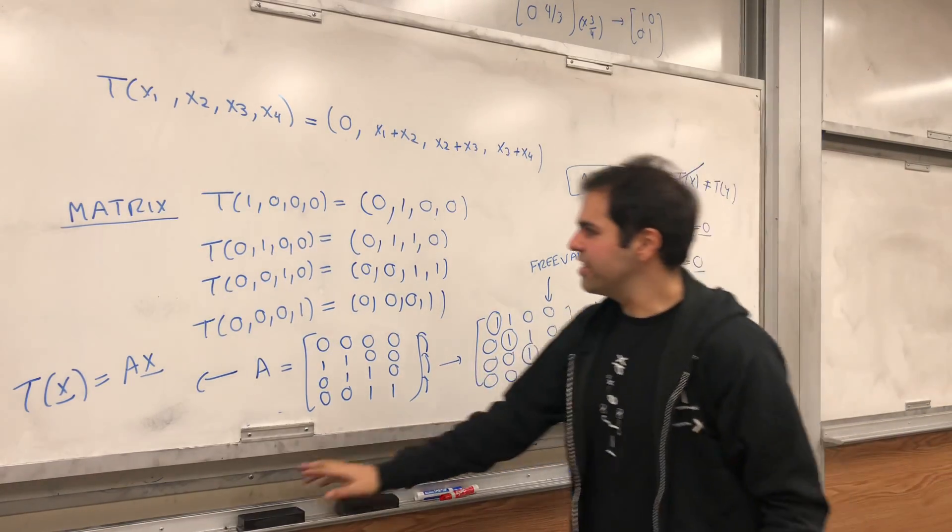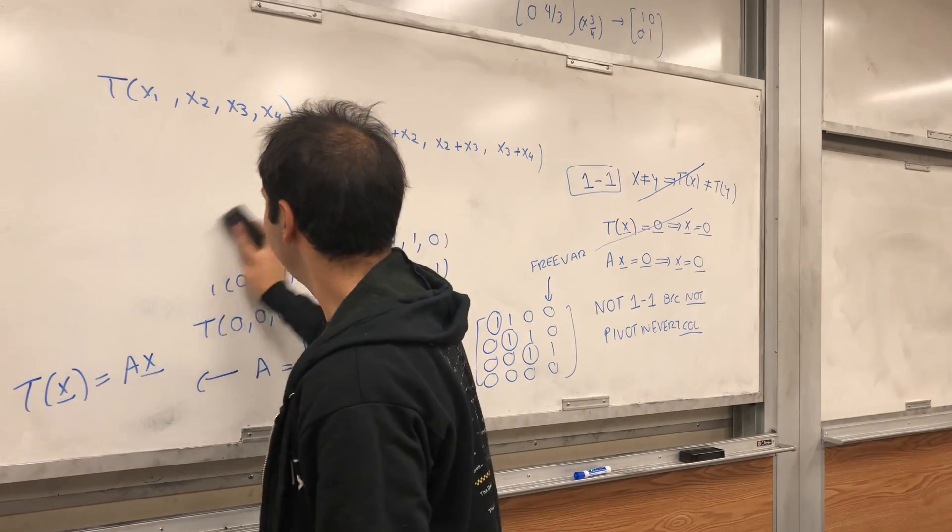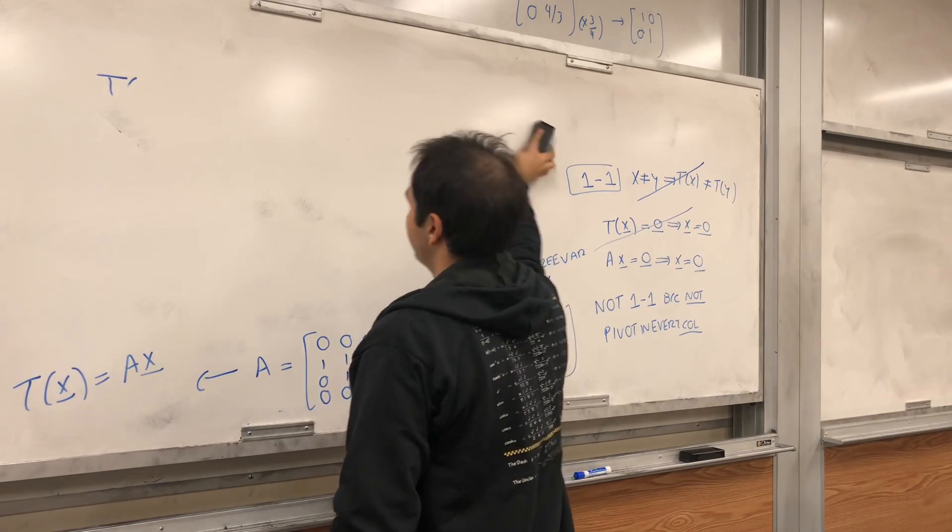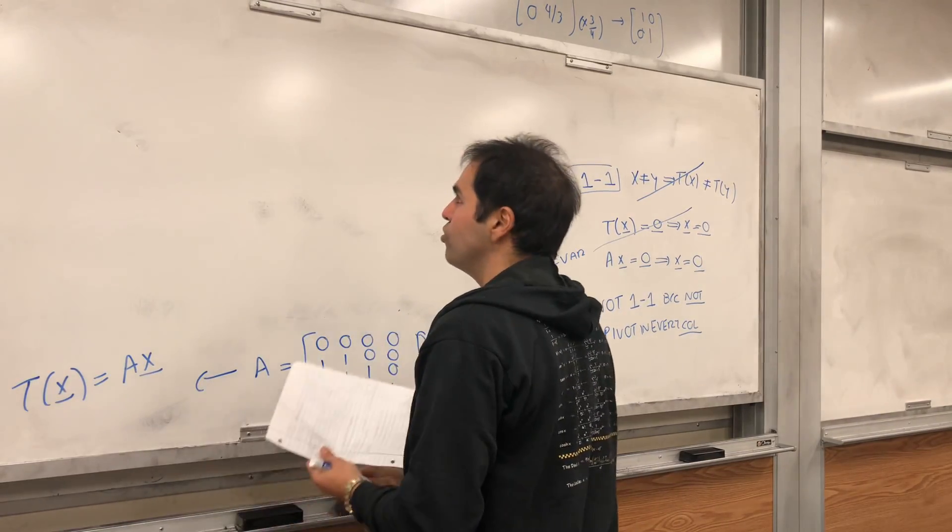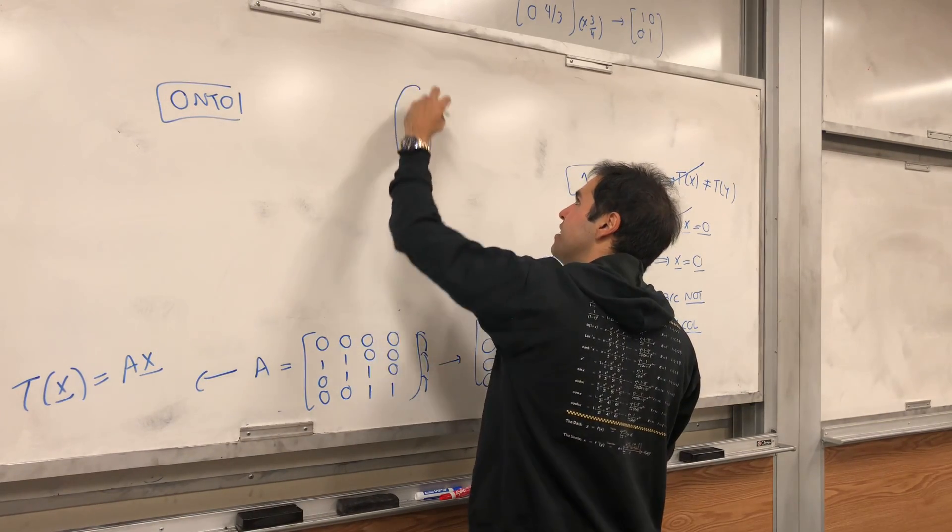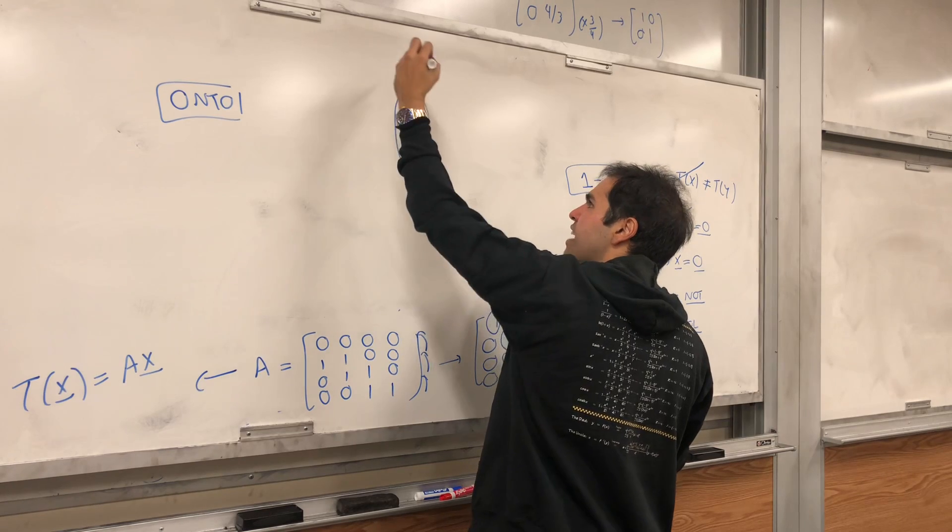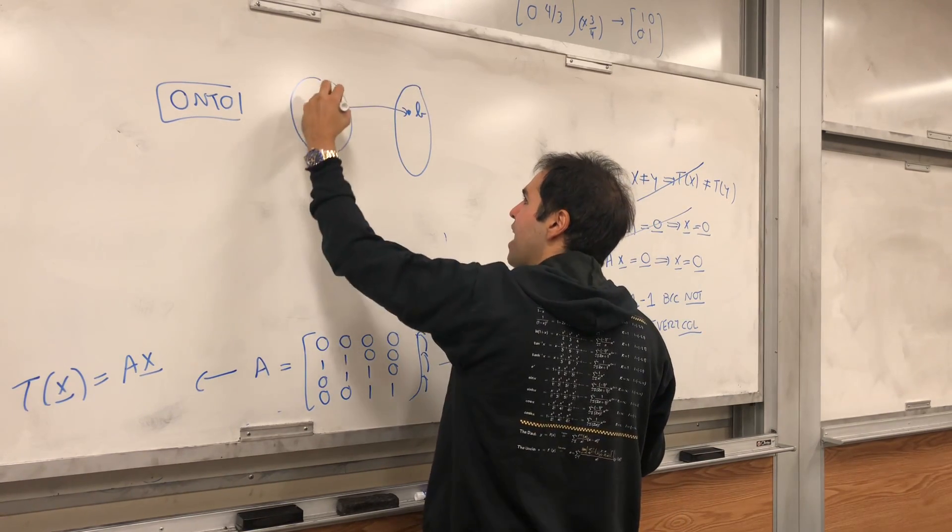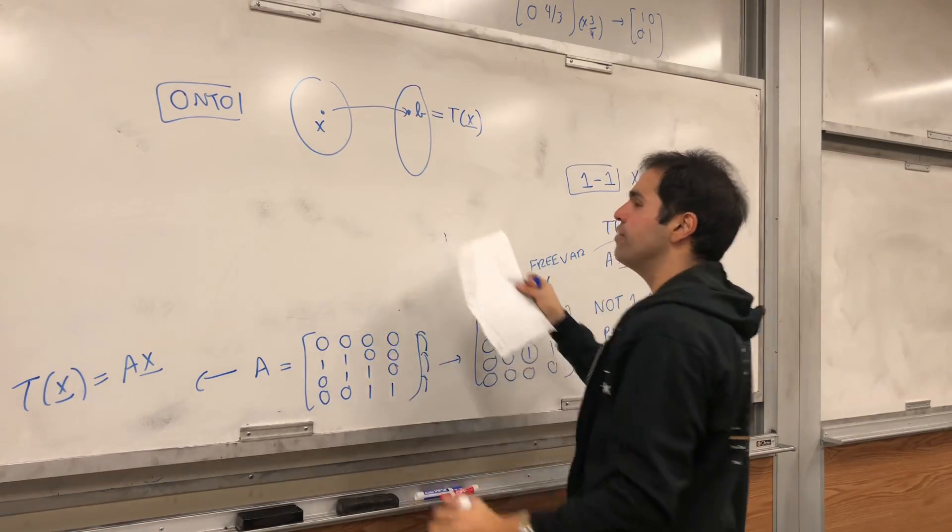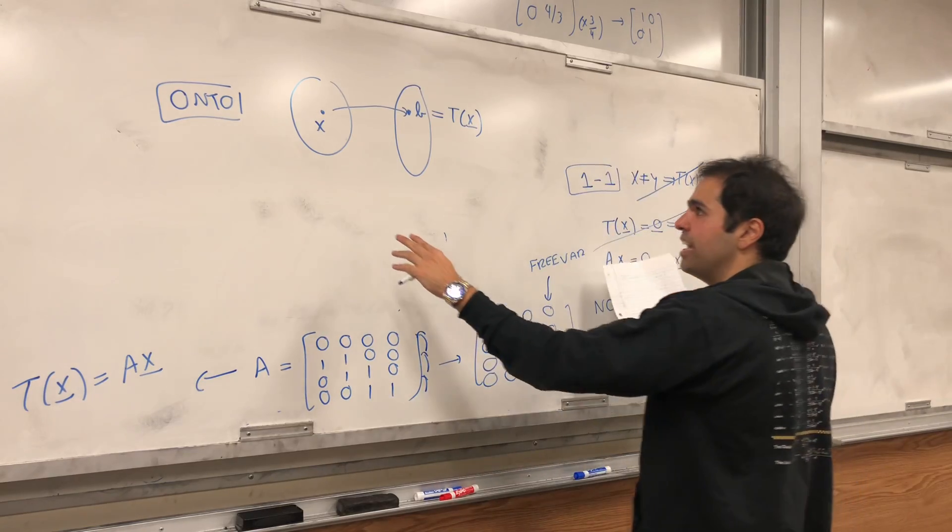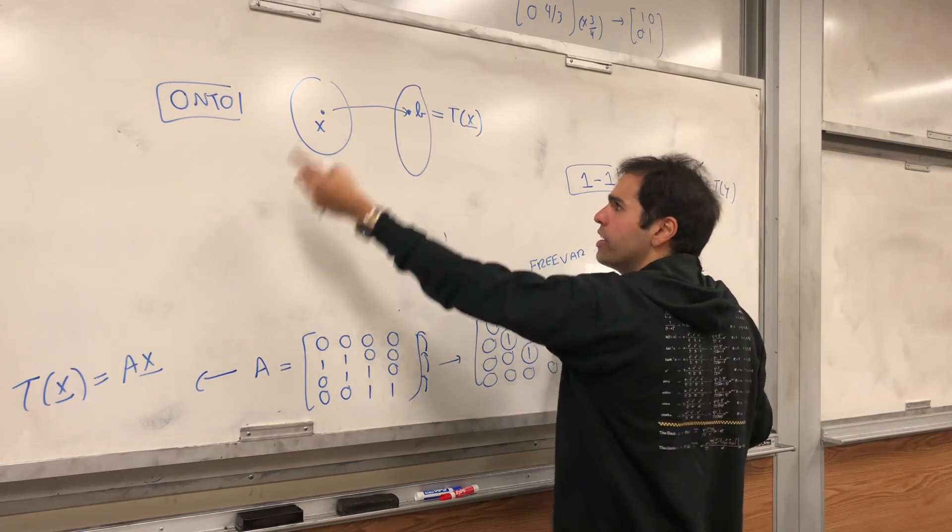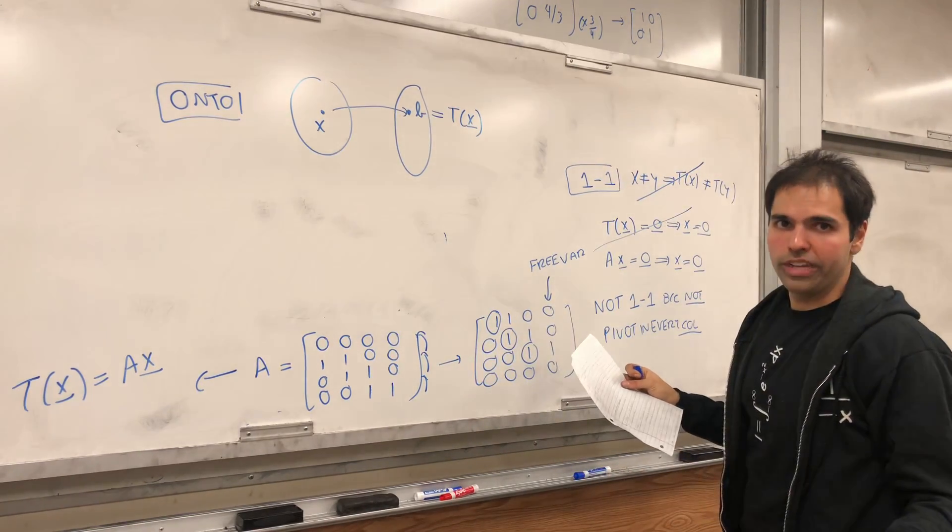Question is, is it onto? So, what does onto mean? I know it confuses a lot of people. Technically, onto R4. What this basically means is for every b in the output, you can find some x with b equals to tx. If you think of this as flying planes, if you think of this as U.S. and this is Europe, for every city in Europe, you can fly to that city from the U.S.